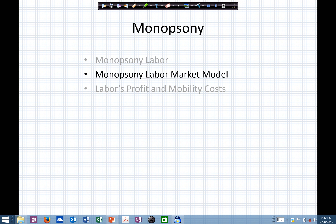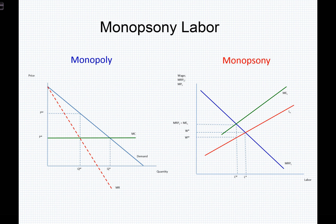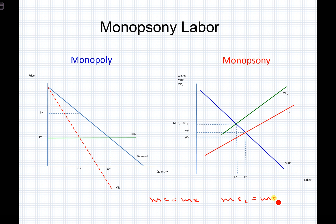In this segment on monopsony, I'd like to take a look at the monopsony labor market model. Let's begin by thinking about what this looks like. Remember that all producers want to produce at a point where marginal cost is equal to marginal revenue. In the labor markets, we think about that as marginal expense of labor being equal to marginal revenue product of labor.